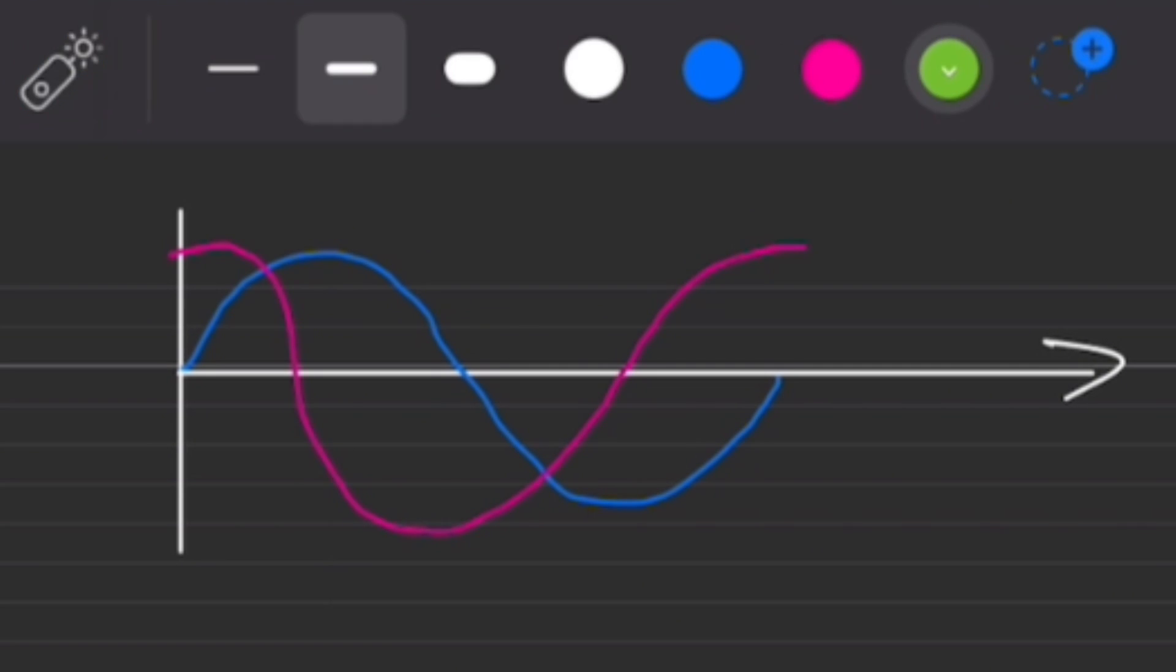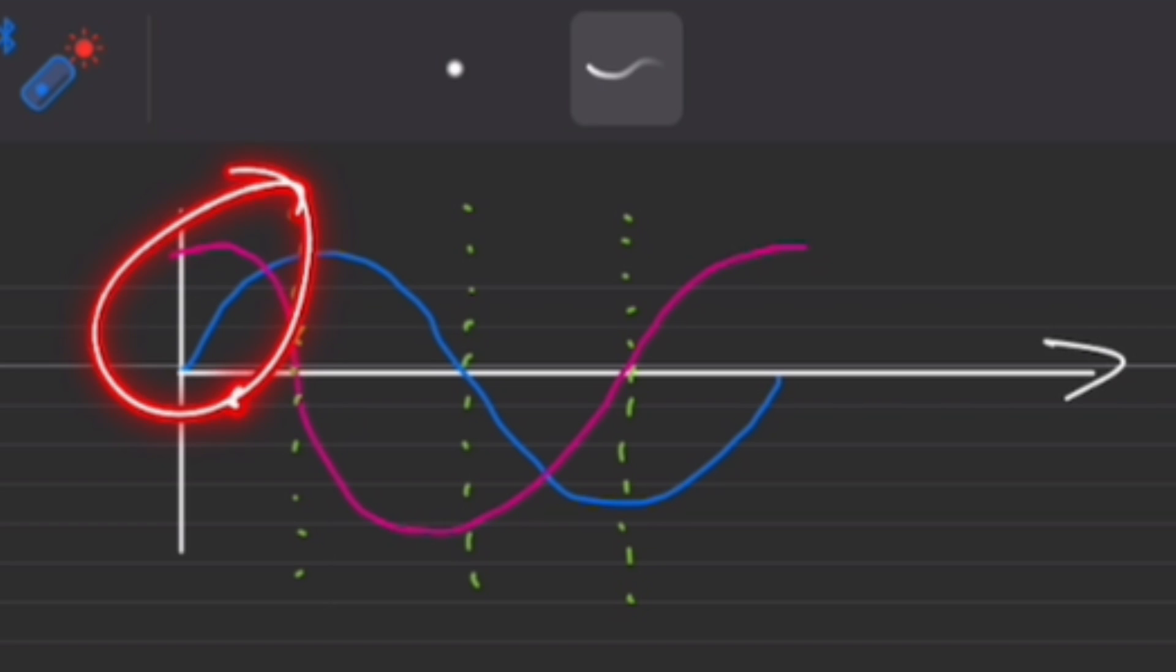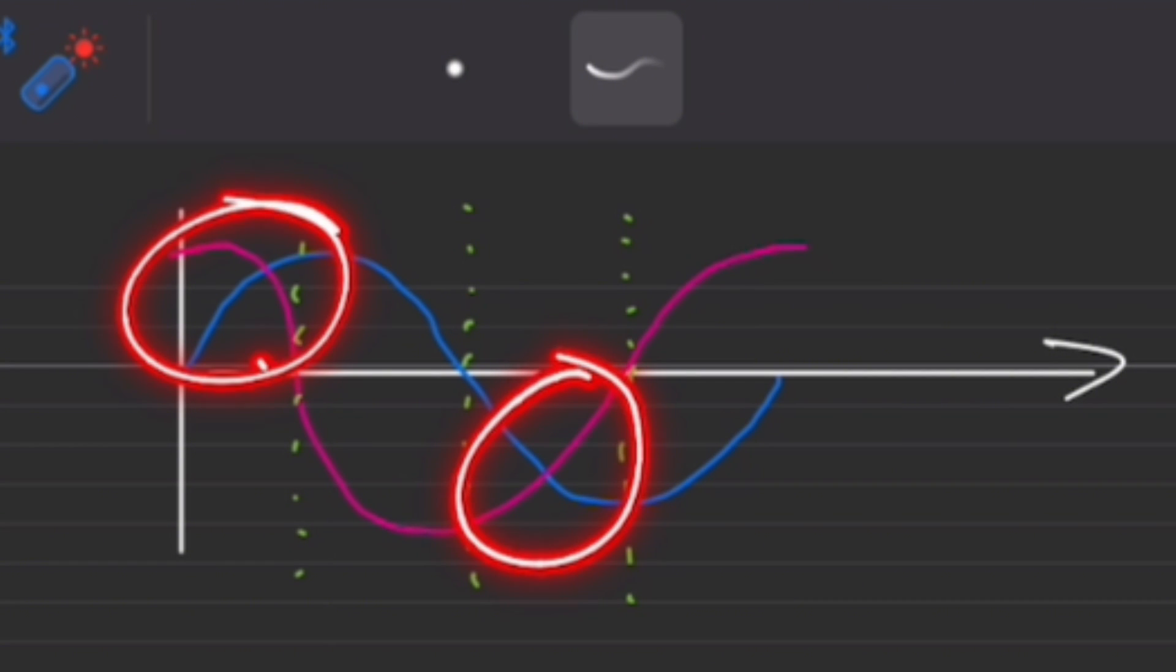But what we can do is we can split this not just in half at pi radians, but also at pi on 2 radians and 3 pi on 2 radians. And what we start to see is this first section is very similar to this last section, this third section. And actually they are the same, it's just the negative version of each other. And exactly the same with section 2 and section 4.